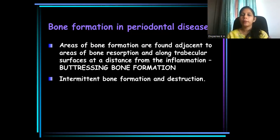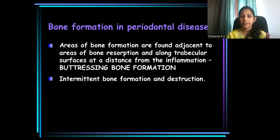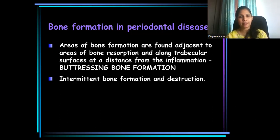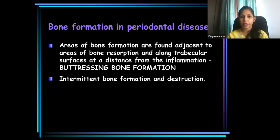Along with bone destruction in periodontal disease, there occurs bone formation in order to compensate for the bone destruction. Bone destruction occurs in one part of the bony trabeculae, whereas bone formation occurs in another part, slightly away from the area of inflammation. That bone formation is known as buttressing bone formation. When it occurs in the central part of the alveolar bone, it is called central buttressing bone formation; when it occurs on the outer aspects, it is called peripheral buttressing bone formation.